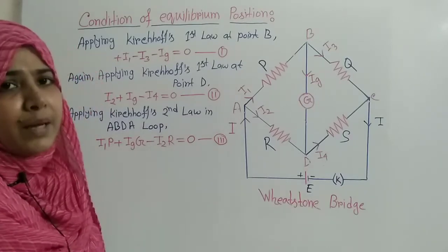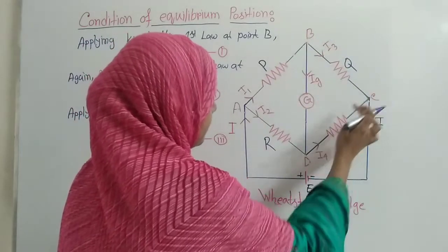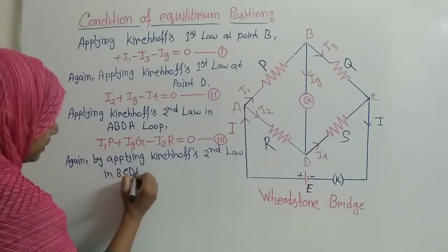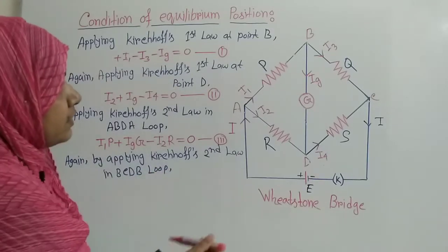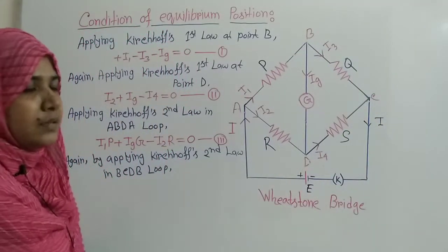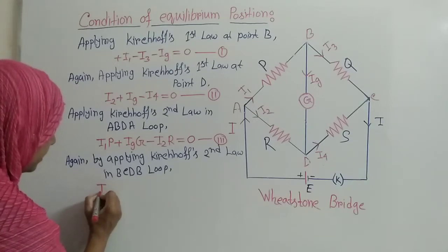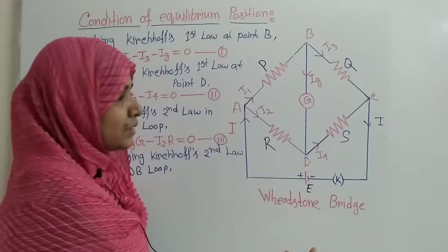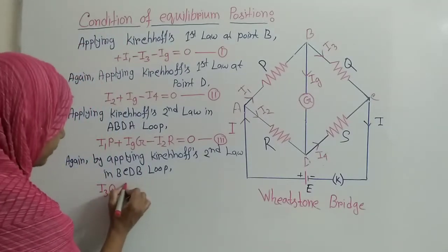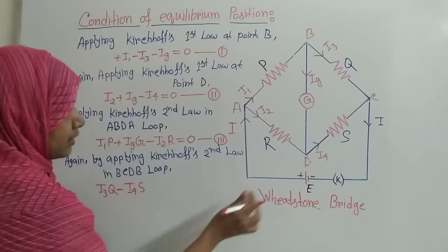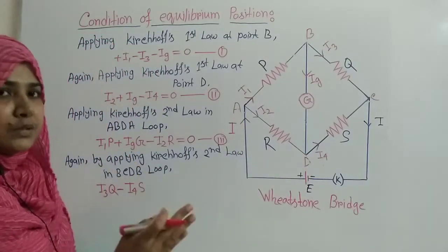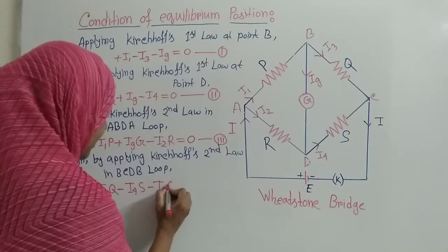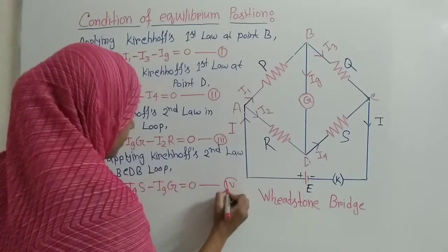In the similar way, now I am going to apply Kirchhoff's second law in the B, C, D, B loop. For the B to C segment, the direction of current and the loop we consider are the same, so this is positive: I3·Q. For the C to D segment, the direction of current is opposite to the loop, so it will be negative: minus I4·S. For the D to B segment, the direction is also opposite, so we write minus IG times G, and this equals 0 — equation 4.